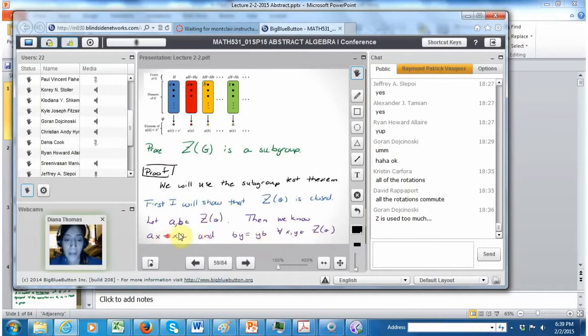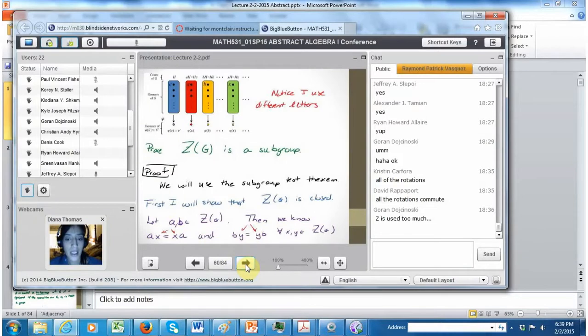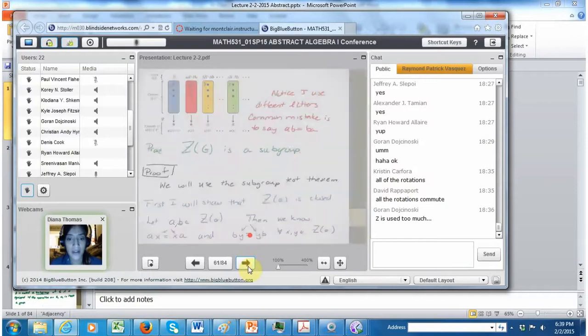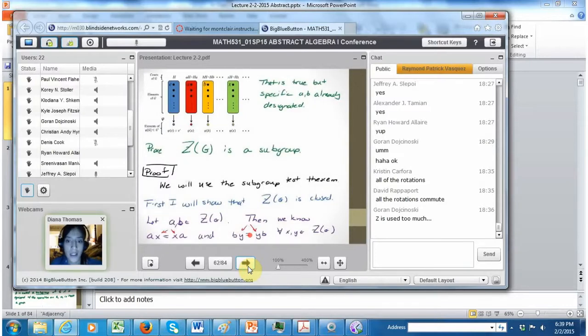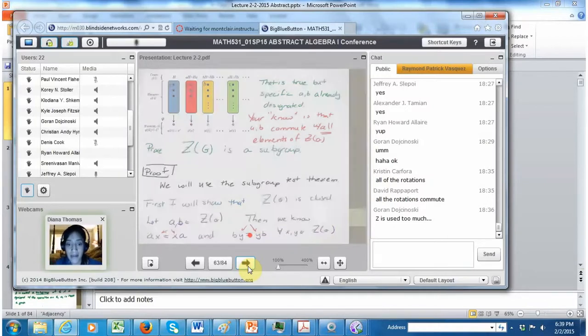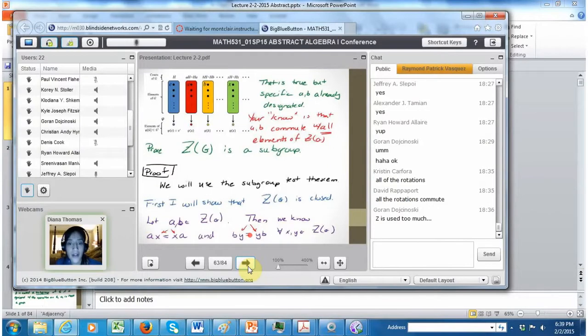So here, what I know is that A commutes with everything else, so I have to call it an X. And I don't use the same X here. I use a different dummy variable Y, so that I don't accidentally confuse the two with each other. And I definitely don't use a B here, because I took two arbitrary elements and I'm going to do something with them. And I don't want to use them again here. And so I gave you a little warning. Notice I used different letters.